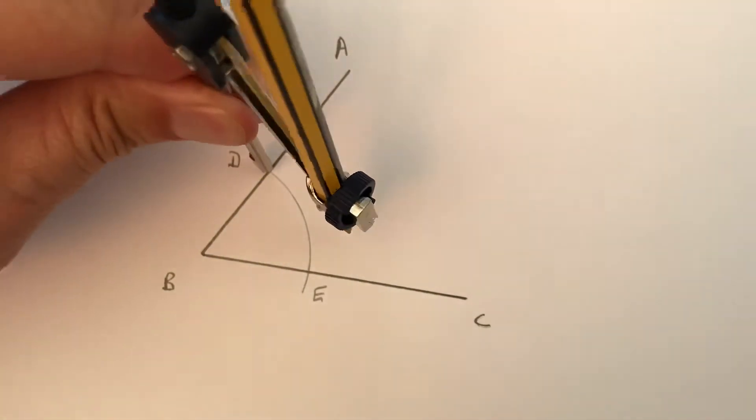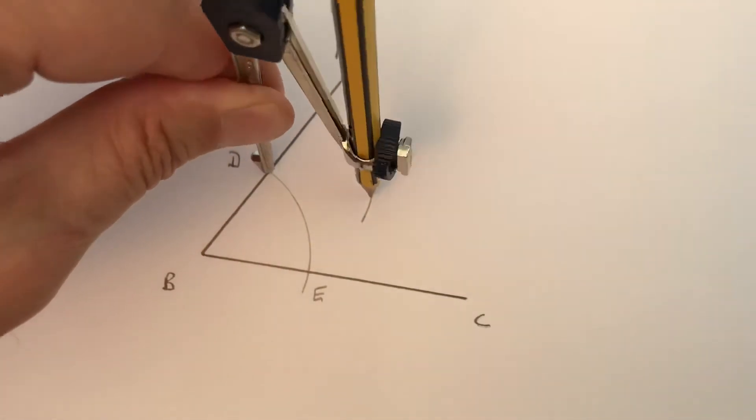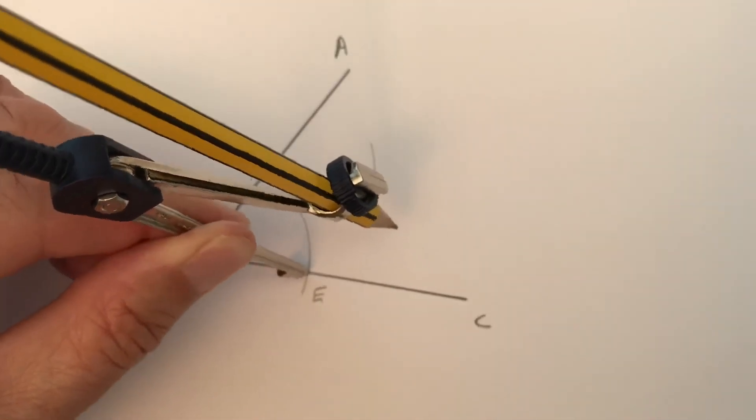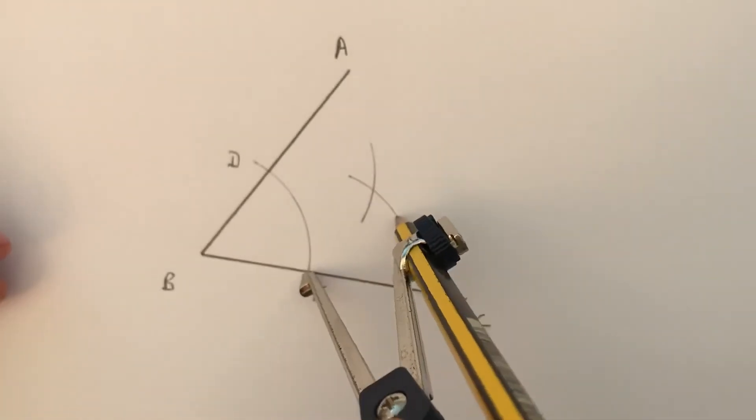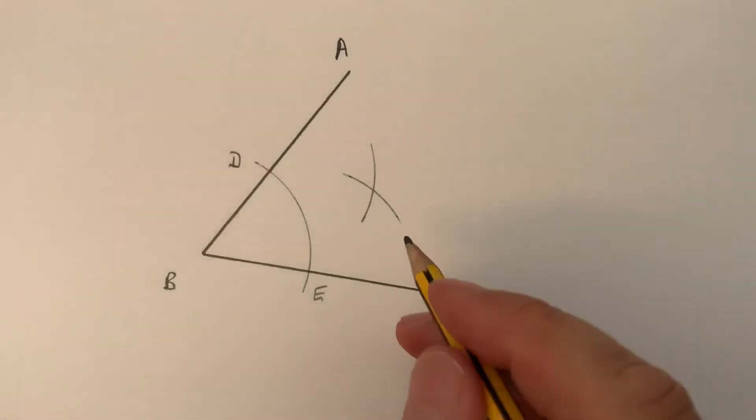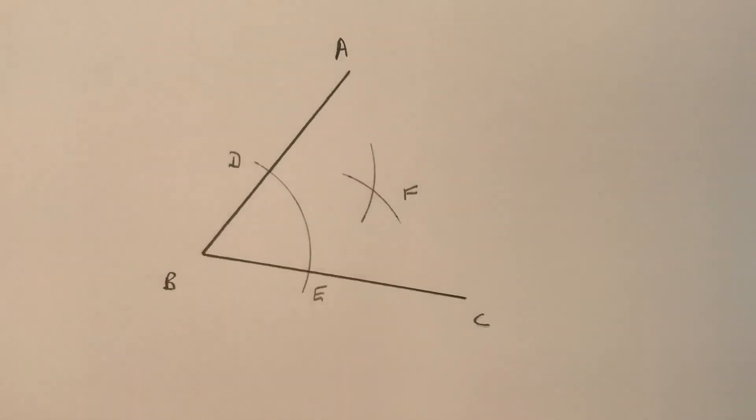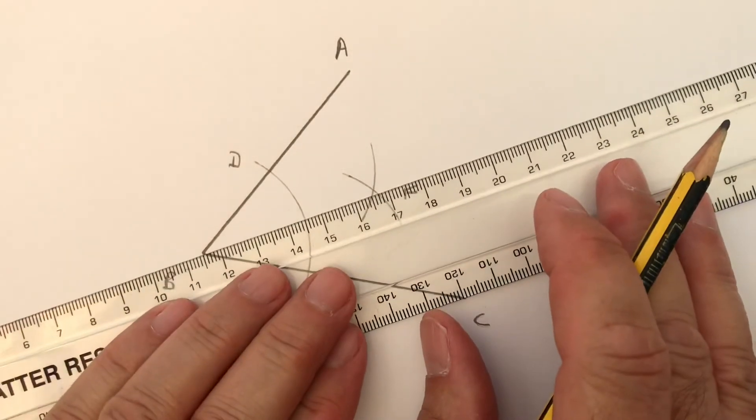Draw an arc in the middle of the angle. Keep the same radius—don't change it at all once you've set it. Put the point on E and draw an arc to intersect the other arc in the middle. Call that point F. Now draw a line from B through F—that will bisect the angle.